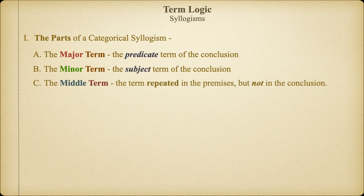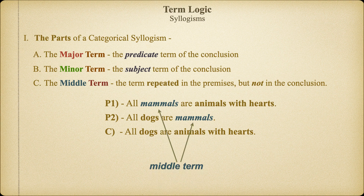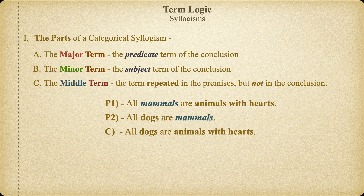Now that we've defined the major and minor terms, we can go on and think about the middle term. The middle term is the term found in the premises but not in the conclusion. Here we see that the term 'mammals' appears in both of the premises but not in the conclusion. As we'll see in the next video, the middle term can be in either the subject or predicate position of the premises, and indeed exactly how the middle term is oriented is going to have a direct impact on the validity of the argument. For now, you just need to understand that the middle term is the one that appears in the premises but not in the conclusion.